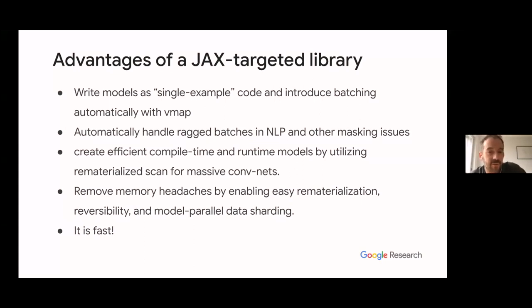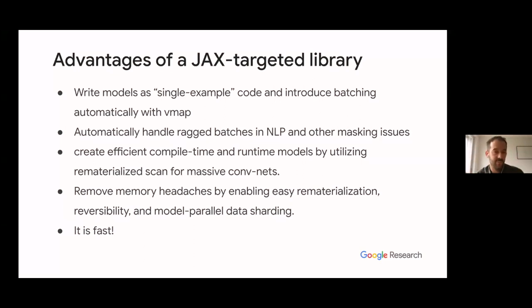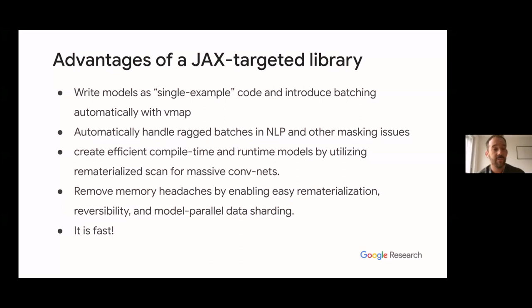Using JAX, you can write models as single-example code and introduce batching automatically with vmap. You can automatically handle ragged batches using masking, create efficient compile-time and runtime models, or remove memory headaches using easy rematerialization or reversibility. For instance, the Reformer was also based on JAX. And it's really fast — Hugging Face recently created scripts training Flax models, and for example you can pre-train BERT in under 18 hours using cloud TPUs for less than $150.